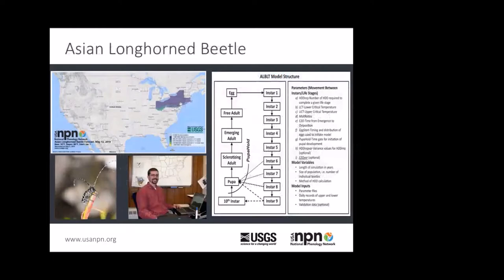I'm going to highlight two examples of those insect phenology forecasts that Jake told you about, where we really collaborated with researchers to improve our forecasts or develop a workflow that helps make models more decision-ready. This is work we did for the U.S. Forest Service with Dr. Dala Trotter, who developed a great agent-based model for Asian longhorn beetles with many stages, each having different thresholds and start dates. We worked with him to develop a model approximating just one stage — emerging adults — which is critical for managers who don't want to cut down trees when adults are emerging, as it facilitates their dispersal.